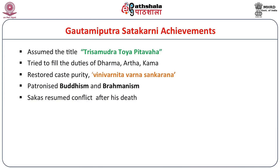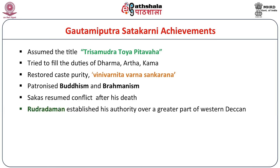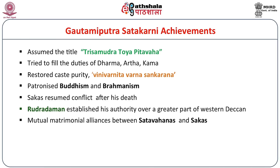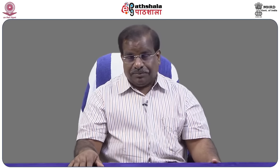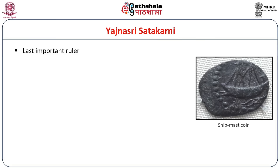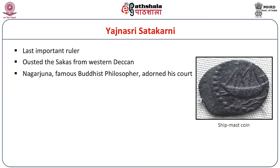After the death of Gautamiputra Satakarni, the Shakas once again resumed their conflict with the Shatavahanas. Rudradaman established his authority over the greater part of western Deccan. There were mutual alliances between the Shatavahanas and Shakas during Rudradaman's time, and he gave his daughter in marriage to the next ruler Vasishthiputra Satakarni. Yajnashri Satakarni was the last important ruler of the Shatavahana dynasty; he ousted the Shaka power from western India and re-established the Shatavahana empire. He was also notable for issuing the first shipmaster coins, indicating flourishing trade.